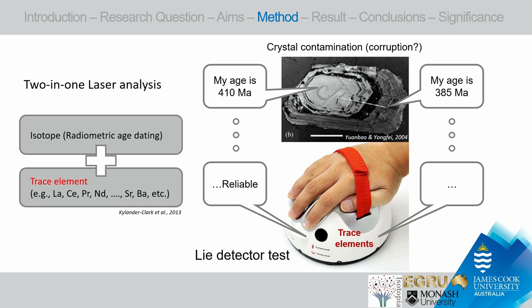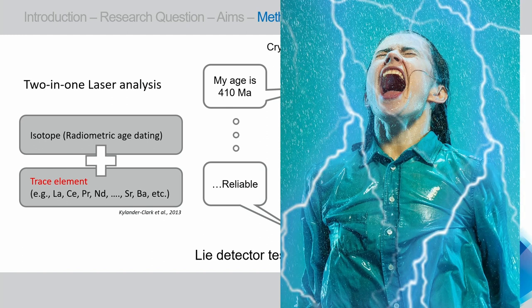The technique I use is two-in-one laser analysis. Normally, one laser analysis for getting isotope composition is standard — you jab the laser on the surface of a grain and get the isotope composition. But this one is different: we also get the trace element composition additionally. It works like a lie detector test. One hypothesis is that erroneous ages come from crystal contamination. If the surface is crystal clean, the age based on isotope composition will be reliable in trace elements too. But if the surface is stained, you'd get a significant error signal.